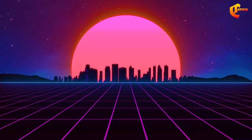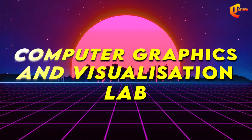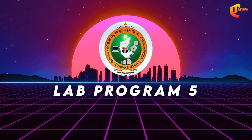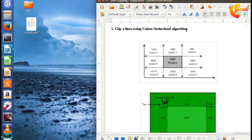Hello everyone, this is the 5th program of computer graphics lab. The 5th program is clipping a line using the Cohen-Sutherland algorithm. The Cohen-Sutherland algorithm is a line clipping algorithm.